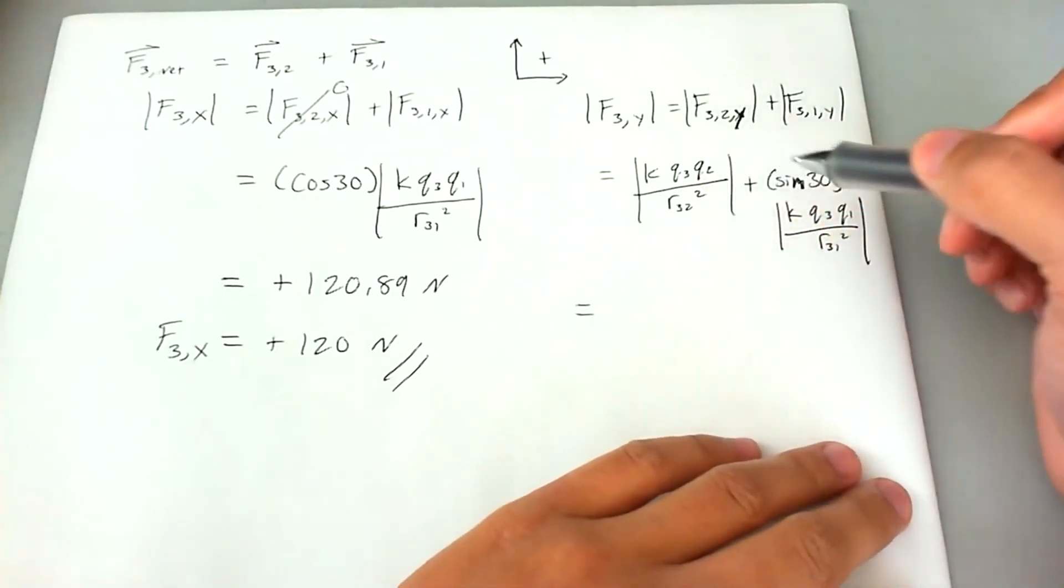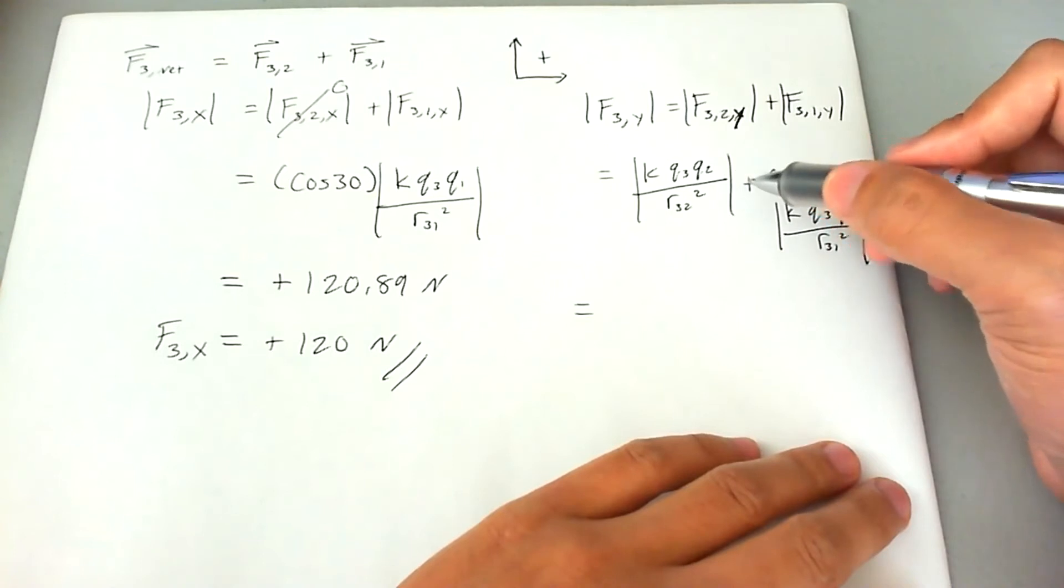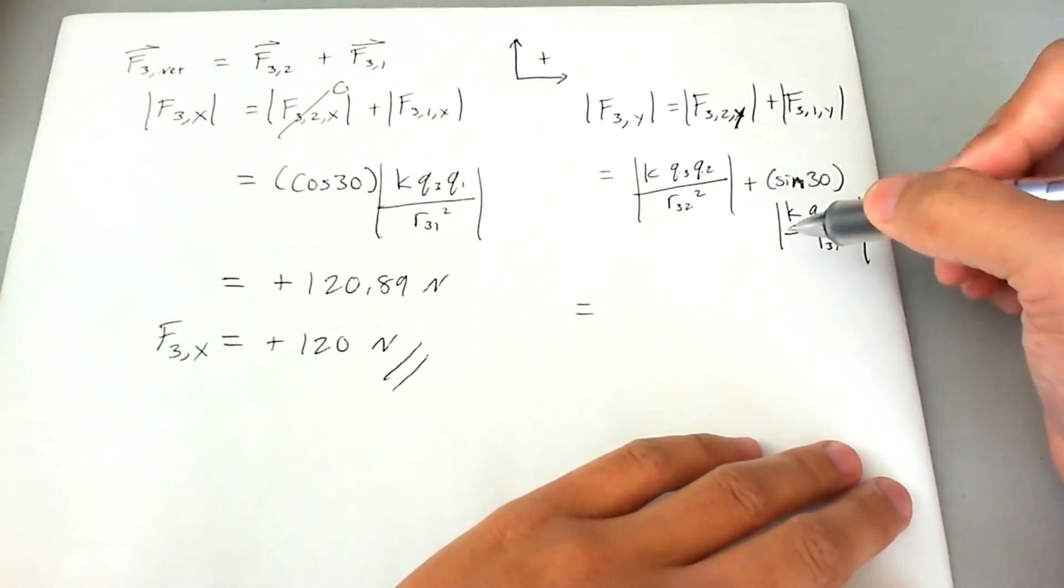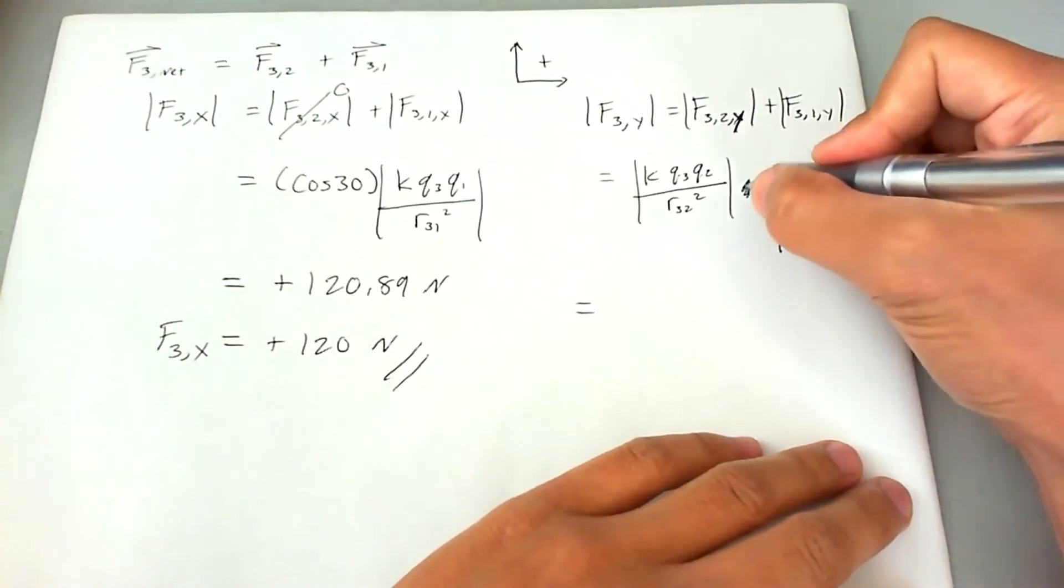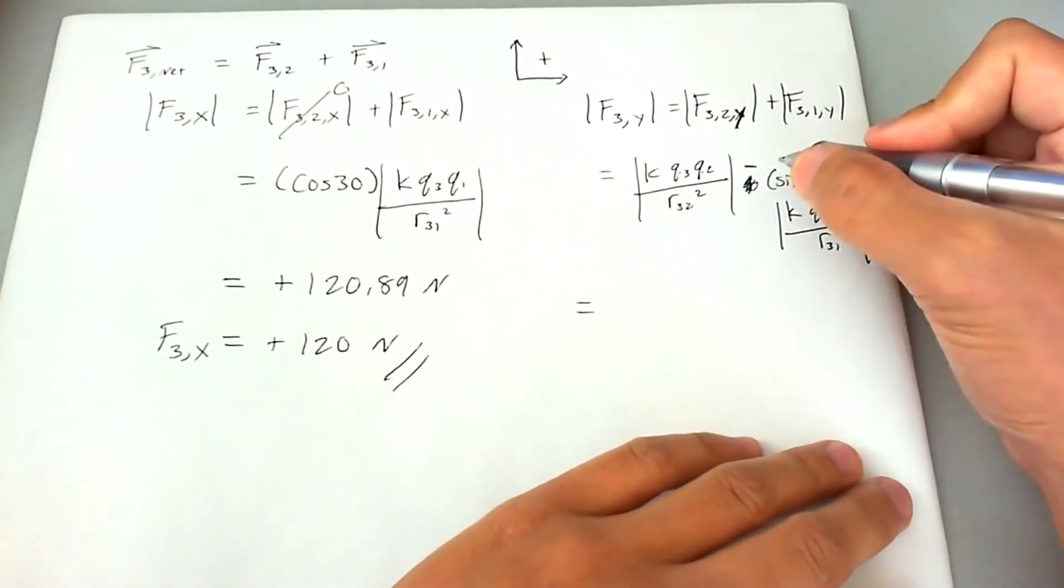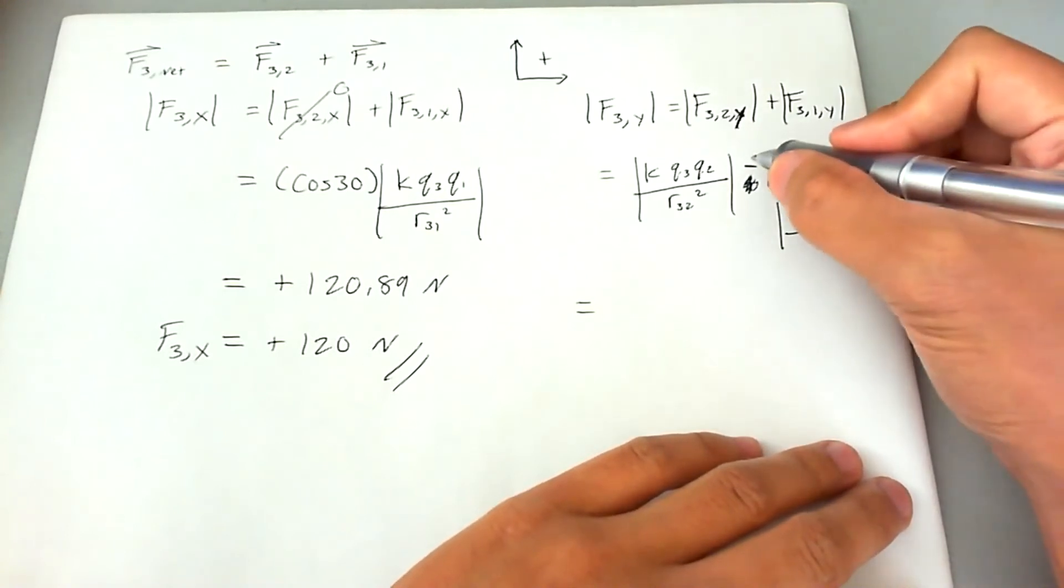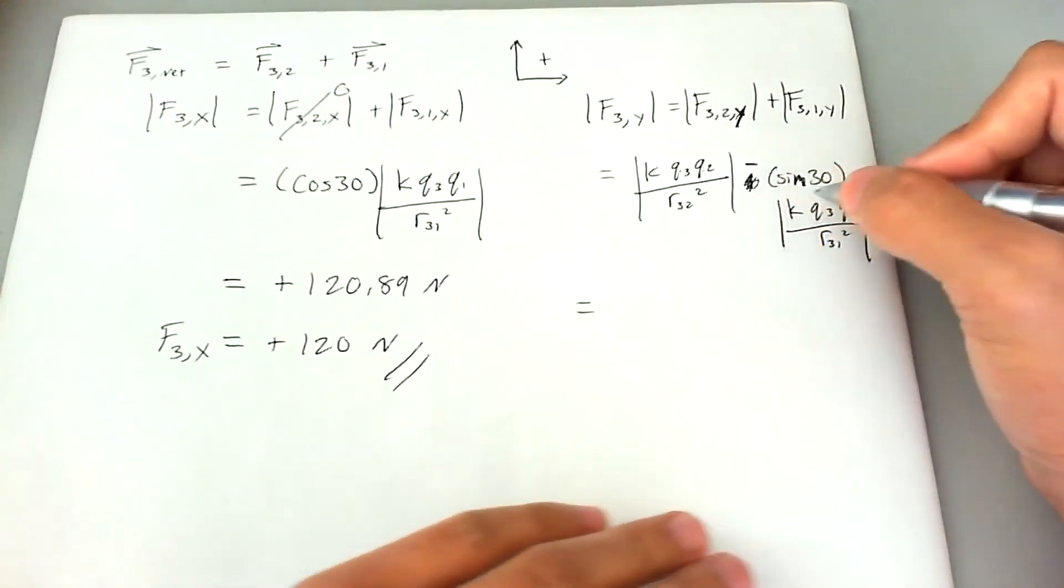However, q1 is a negative. So it's going to pull q3 toward it. And since q1 is beneath q3, it's going to pull a little bit downward as well as to the right. So since we have complete control of the sign, we're going to make it a negative because we know a priori before doing all the math that it has to go down. So we have complete control of the sign to be negative in the second term.